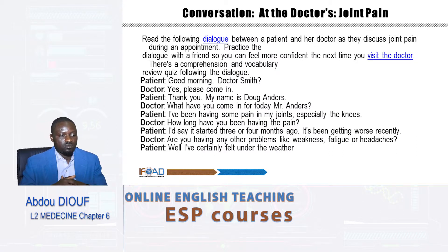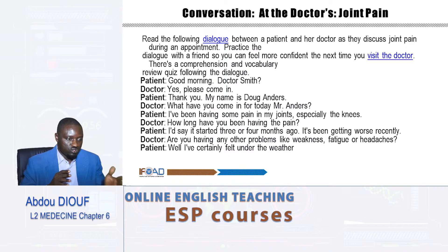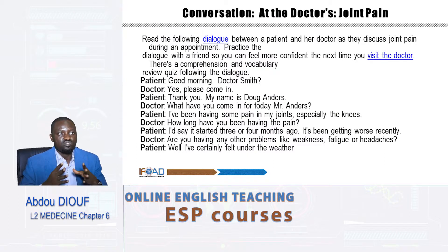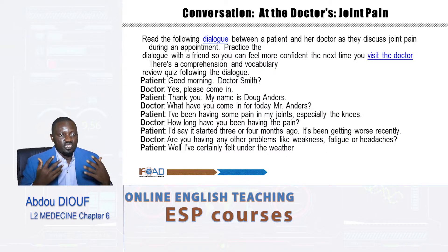The doctor may ask you this question: what have you come in for today, Mr. Andrews? And you have to give and explain the reason why you visit the doctor. So the patient can say: I've been having some pain in my joints, especially the knees. You have to be exact, because the first meeting with the doctor can be considered as the first consultation. So you should be clear. You should know the naming of all diseases, so that once you speak with the doctor, you know exactly how to name your pain in English.